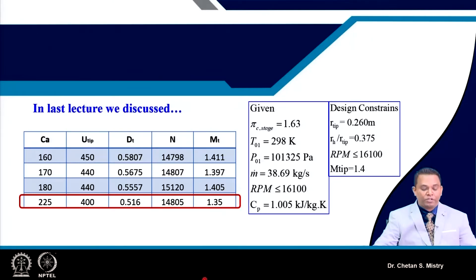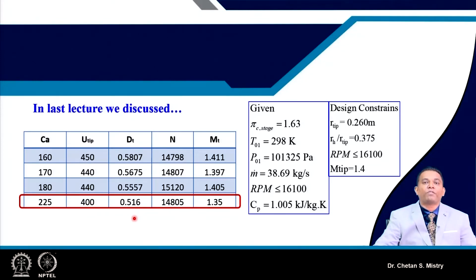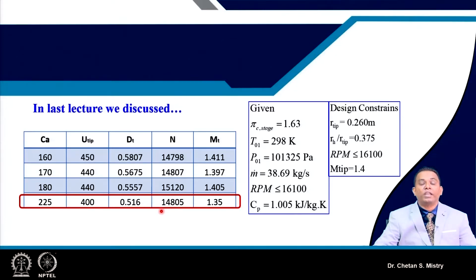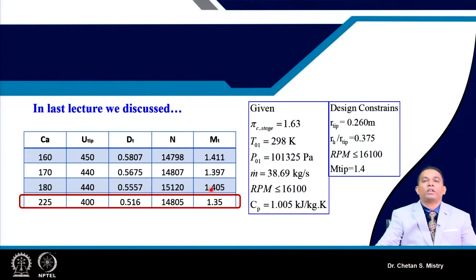Finally, we came up with a solution: axial velocity of 225 m/s, peripheral speed of 400 m/s, tip diameter of 0.516 m, which is less than required. That is why we accepted a rotational speed of 14805 rpm. The tip Mach number was constrained at 1.4, but for our assumed values it came to 1.35, which we accepted.